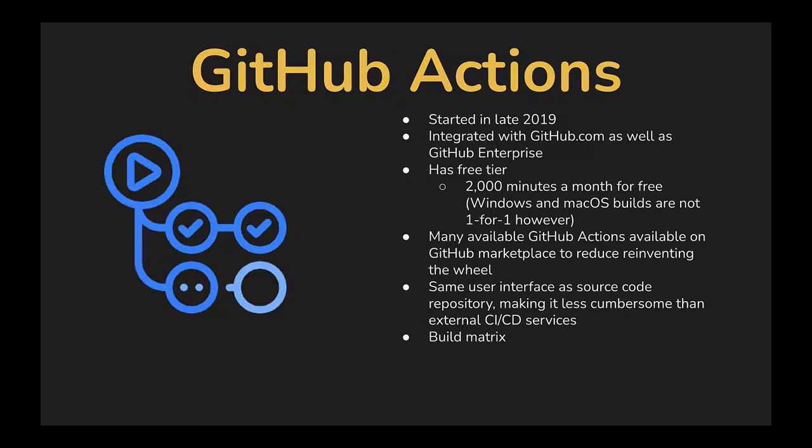They offer something called the build matrix, which allows you to run builds in parallel on multiple different versions of your runtime or package versions, running tests against all those different versions in parallel to shorten your build time and test against many different things as quickly as possible.